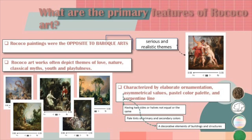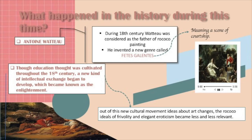Rococo paintings were the opposite of Baroque art. Baroque art shows seriousness and realistic themes. Rococo artworks often depict themes of love, nature, classical myths, youth, and faithfulness. The primary features of Rococo were characterized by ornamentation, elaborately stylized shell-like, rock-like, and scroll motifs, asymmetrical values, a pastel color palette, and serpentine lines curving in an alternate pattern that were intricate and delicately detailed.